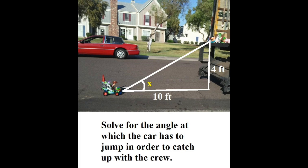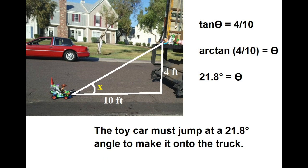Given the height of four feet from the ground to the truck and ten feet for the distance from the toy car to the truck, solve for the angle at which the car has to jump in order to catch up with the rest of the crew. Given the opposite side of four feet and the adjacent side of ten feet, we use tangent of θ = 4/10. In order to find the degree, we use arctan of 4/10 and get the angle of 21.8 degrees. Therefore, the toy car must jump at a 21.8 degree angle to make it onto the truck.